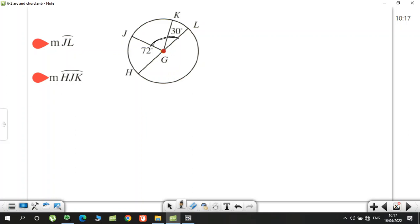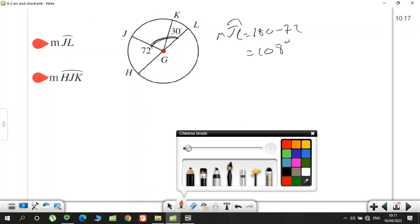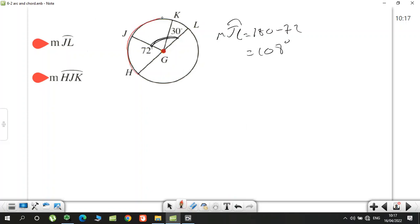Same very similar question. JL, so to calculate JL I need to find this central angle. So 180 minus 72, it's going to be the JL, sorry, measure of JL, 180 minus 72 is 108. That's the JL. HJK, I know semicircle is 180 minus 30, so it's equal 180 minus 30 is 150.